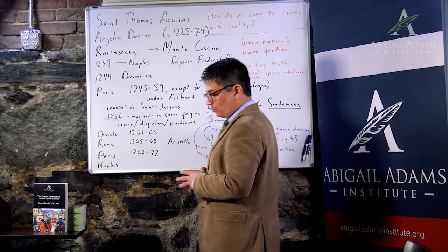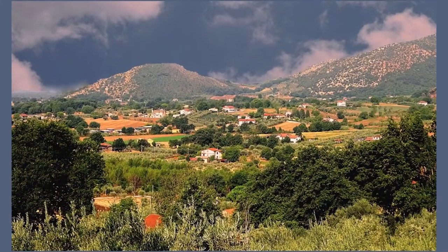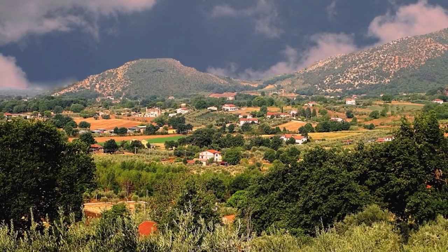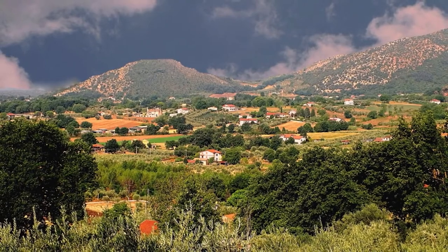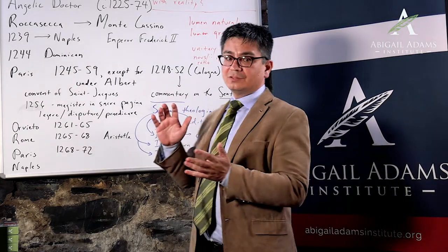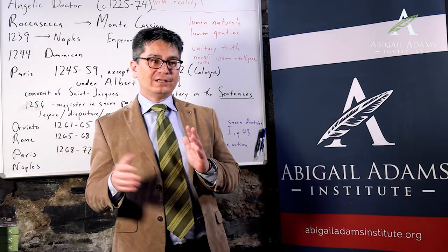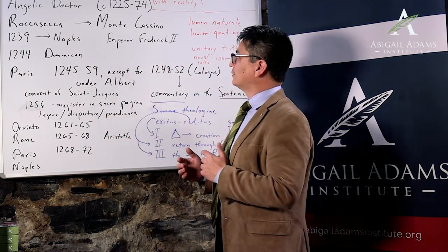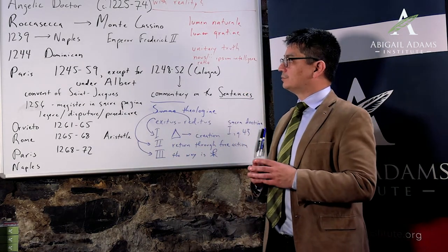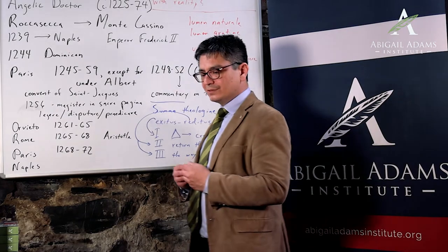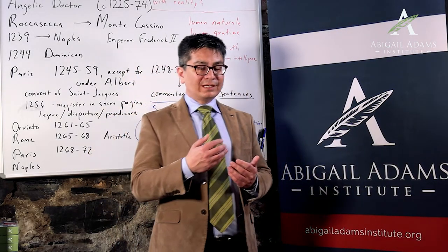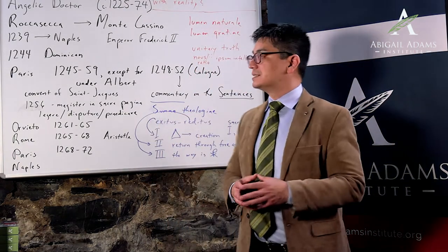St. Thomas was born in Roccasecca, which is between Rome and Naples near Monte Cassino, the great monastic foundation of St. Benedict. He was born around 1225, maybe 1224, and he died in 1274, not even 50 years old, which is quite remarkable. His family was of the minor nobility and related to the Counts of Aquino, so hence Aquinas.